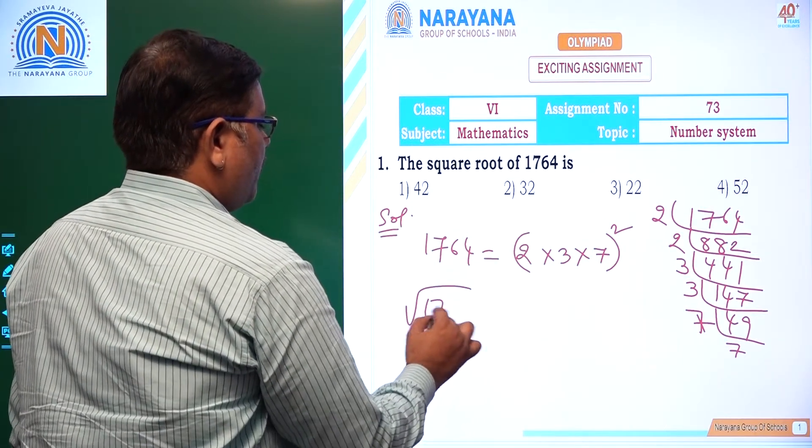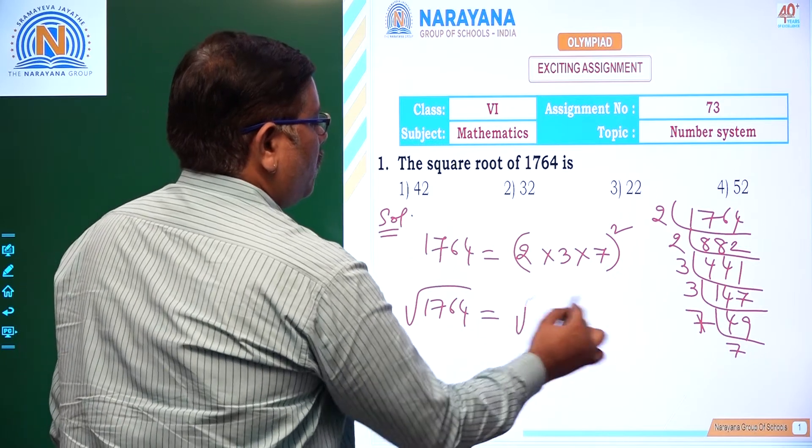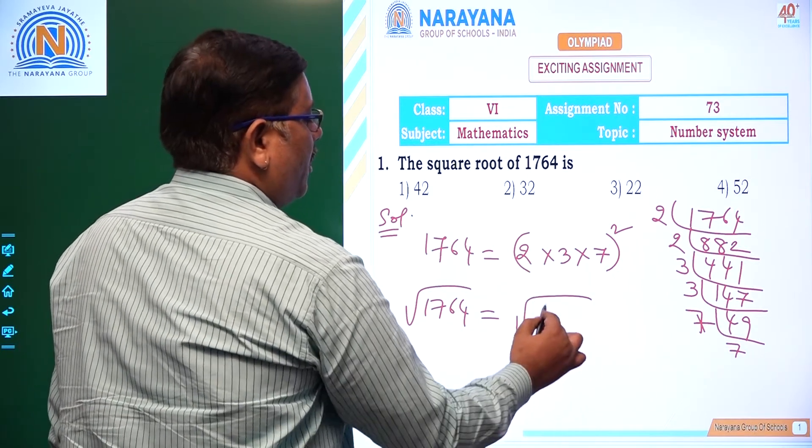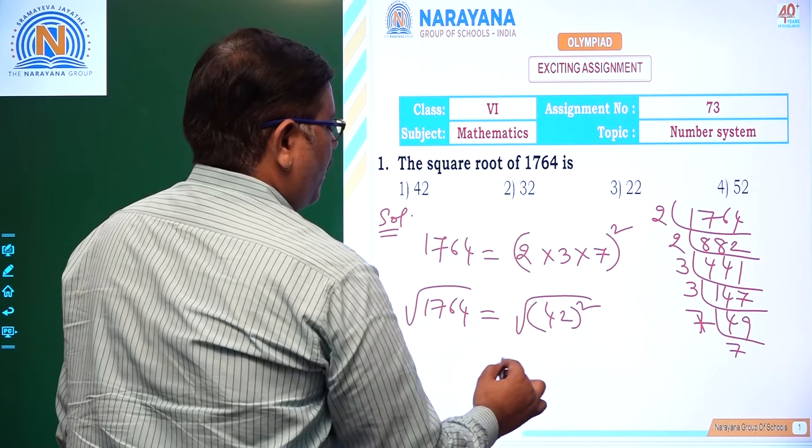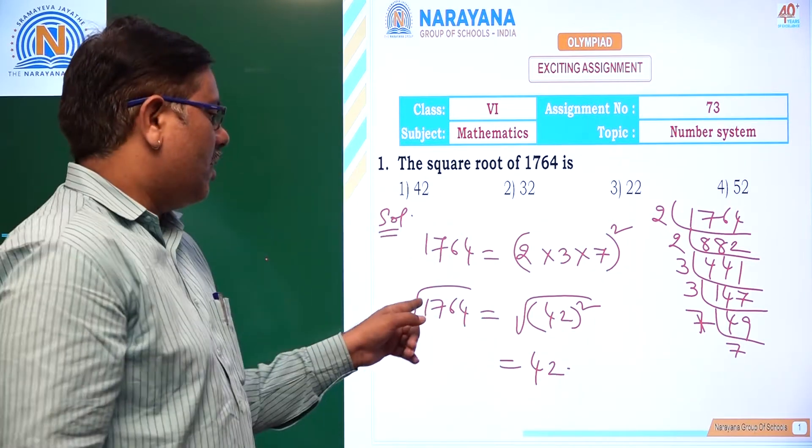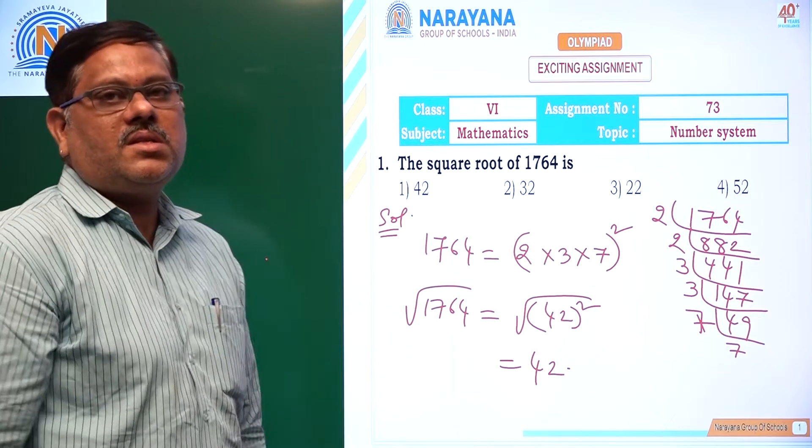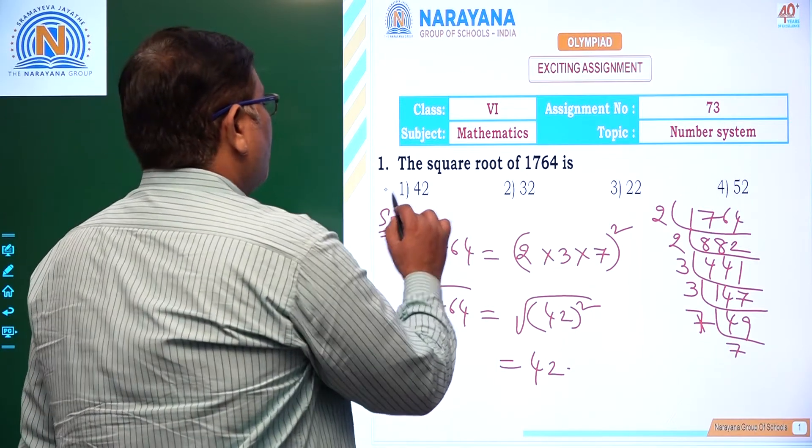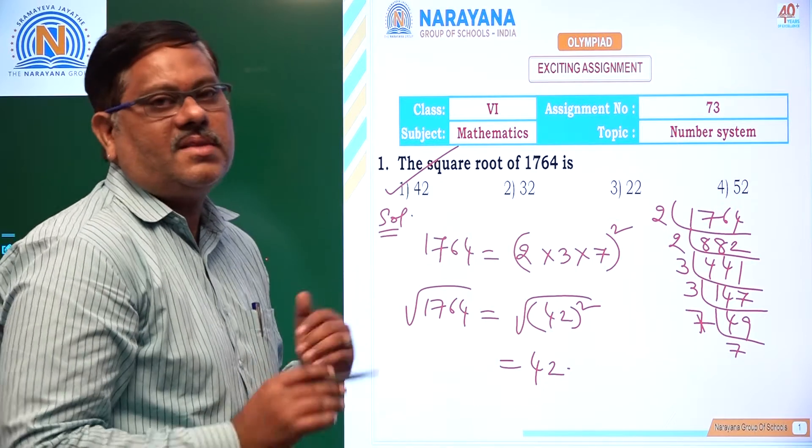So root over 1764, that becomes root over 2 times 3 times 7 whole square, that is 42 whole square. So root over 42 square is 42. So under root of 1764 is 42. 42 is the first option, that is the right answer.